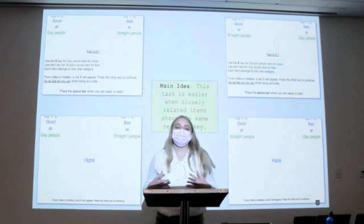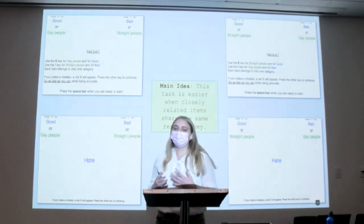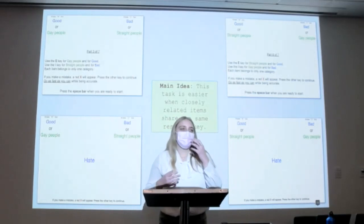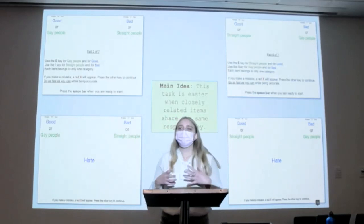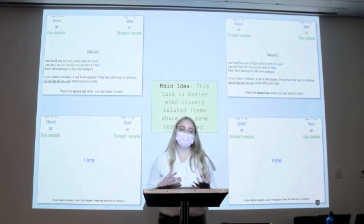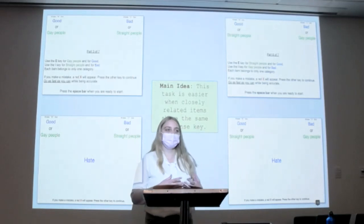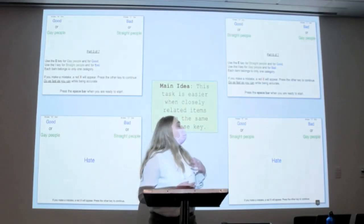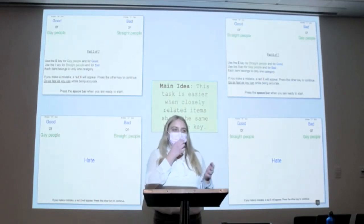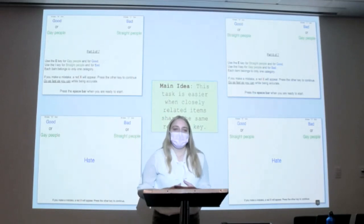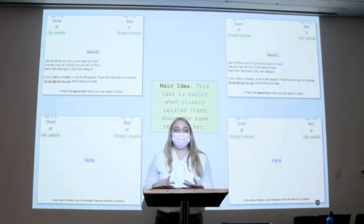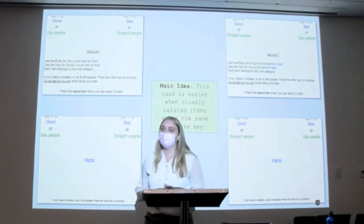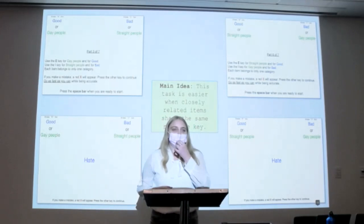The main idea is that this task is easier when closely related items share the same key, such that if someone has an implicit preference for straight people relative to gay people, it would be easier for them to use the condition on your right, where good or straight people are connected to the same key. With this information, we can start to explore our implicit associations and try to dismantle them.